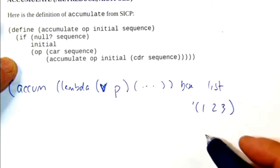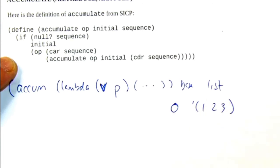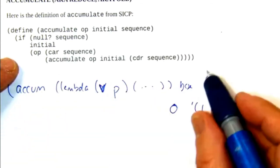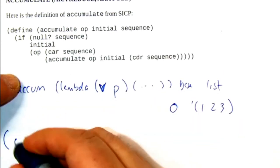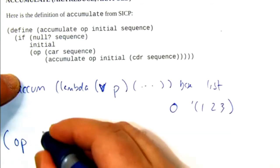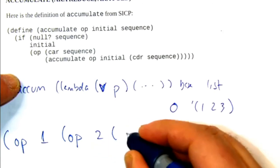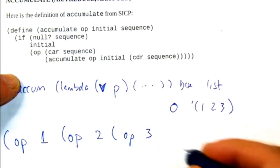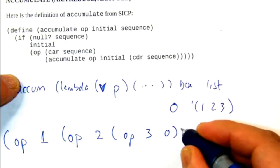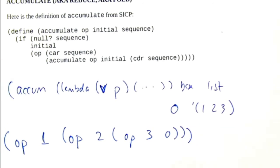And I'm going to give it a base case of zero, which is the right answer in this case. And I want to show the way this recursion unfolds. What we're going to get is op of one combined with op of two combined with op of three combined with zero. That's what the recursion does.